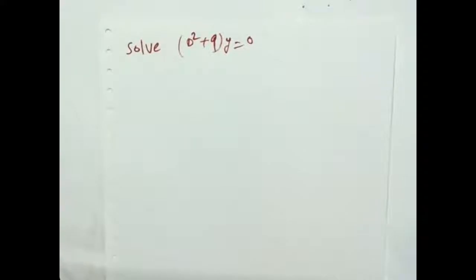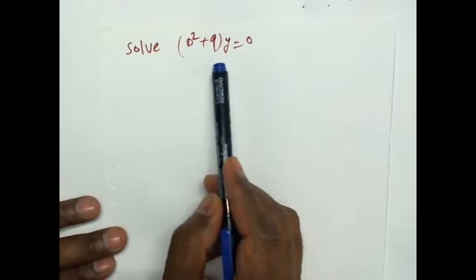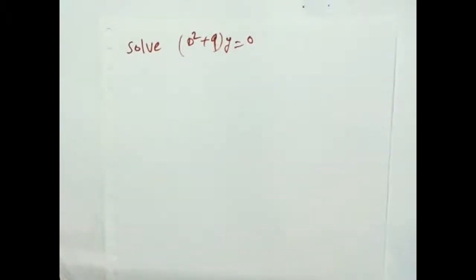Hi friends, here is one differential equation example. Solve: (D² + 9) · y = 0.